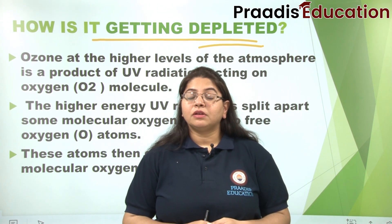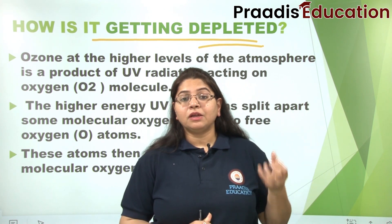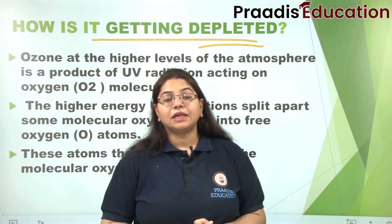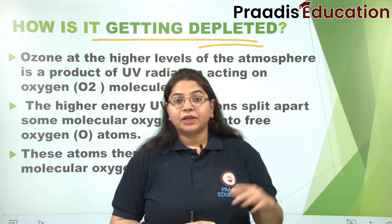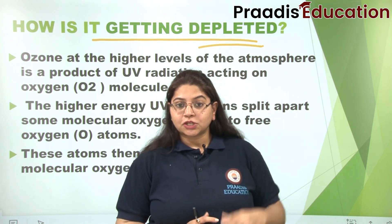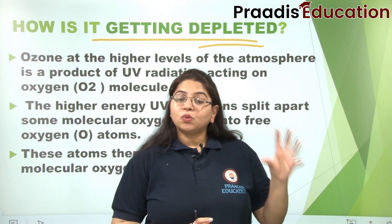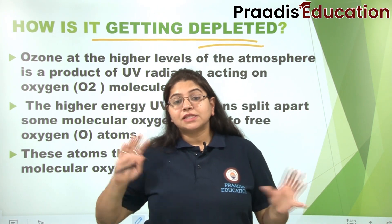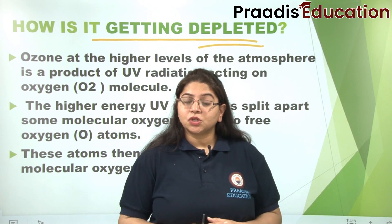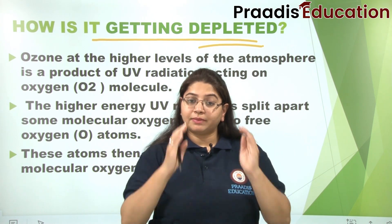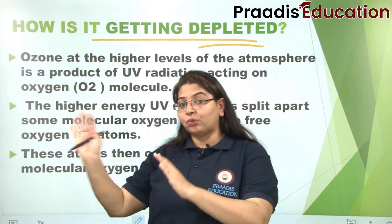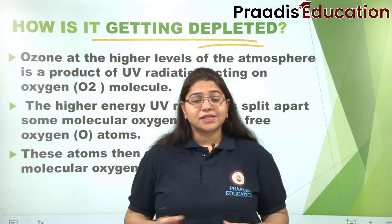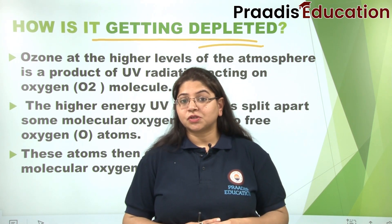We did not pay attention to what was happening. These chlorofluorocarbons go up there and react, splitting the ozone into molecular oxygen and nascent oxygen — meaning into O2 and O. When it is converted into O2 and O, then ozone takes the normal oxygen form.